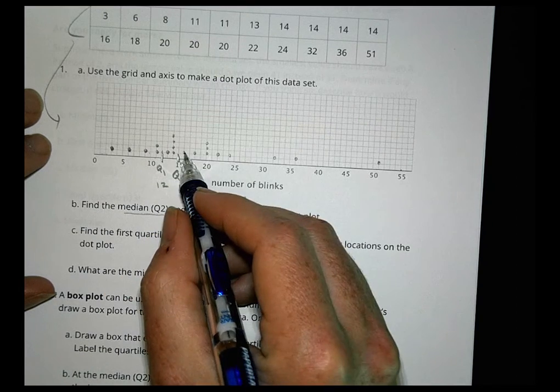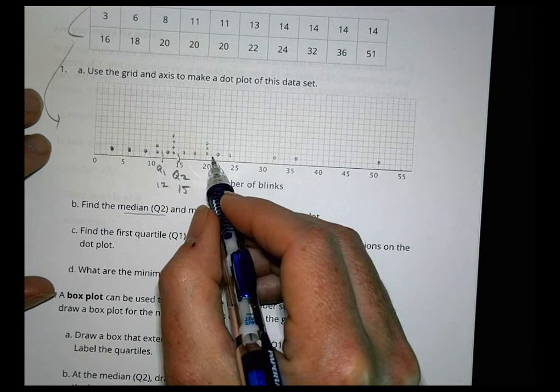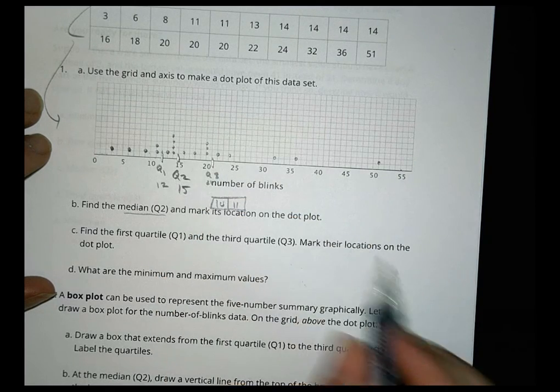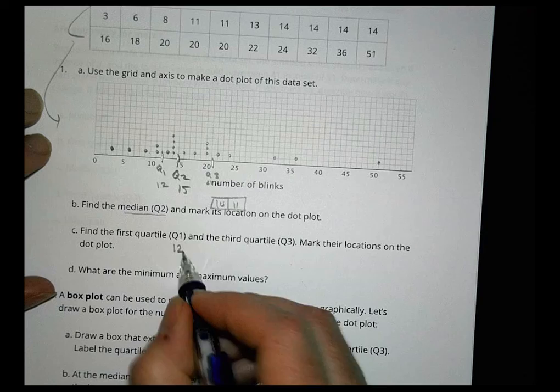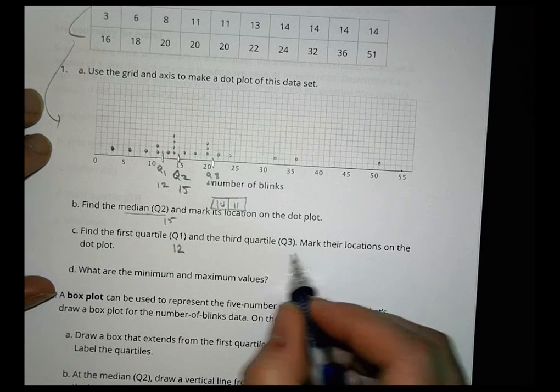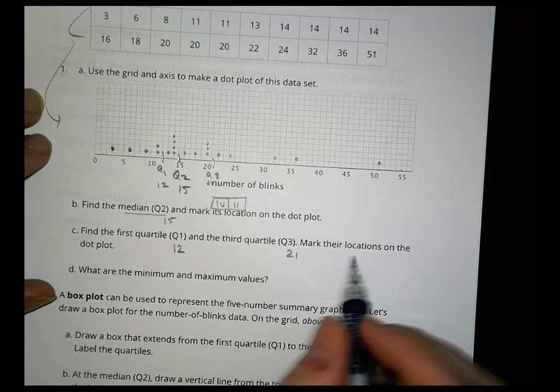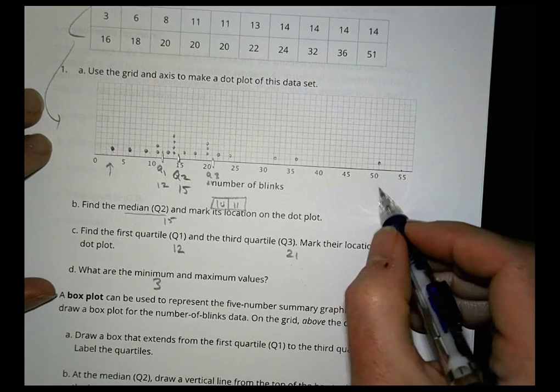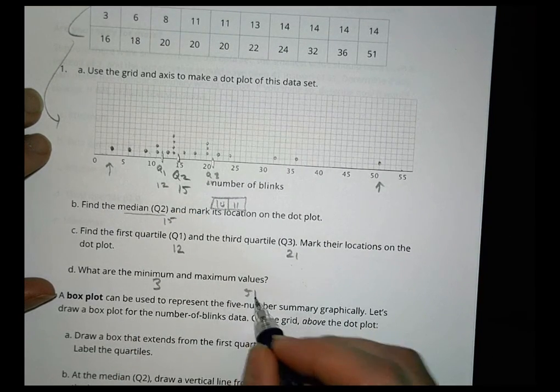And over here we're going to go one, two, three, four, five. So it's going to go in between those guys right there. There's quartile three, which is at twenty-one. So we have the value of quartile one at twelve, quartile two is fifteen, quartile three is twenty-one. The minimum value is here at three, and the maximum value is up here at fifty-one.